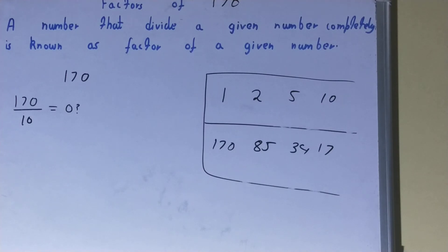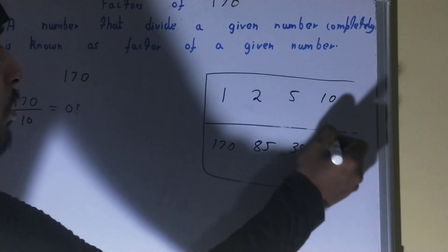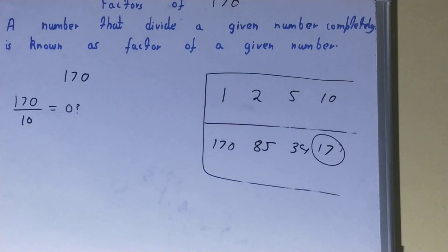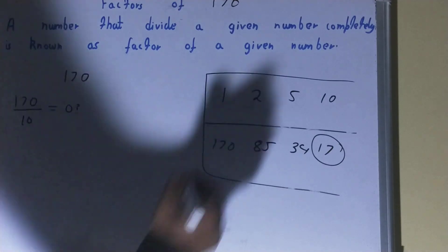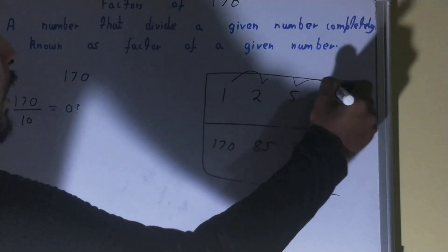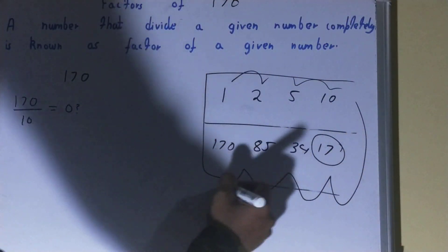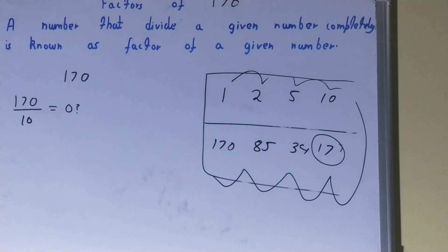Now notice carefully that in the second row you have the prime number 17. Whenever you spot a prime number in the second row, your work is done — you don't need to check any further. The complete set of factors for 170 is: 1, 2, 5, 10, 17, 34, 85, and 170.